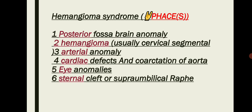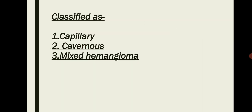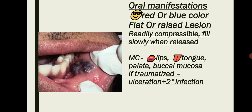Hemangioma is classified as capillary, cavernous, and mixed types. Orally, hemangioma appears as a red or blue colored, flat or raised lesion that is readily compressible and fills slowly when released. The most common oral sites affected are the lips, tongue, palate, and buccal mucosa. If traumatized, these lesions lead to ulceration and secondary infection.